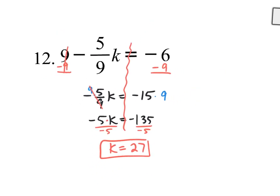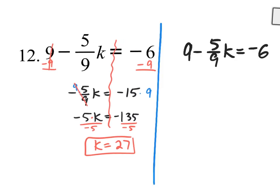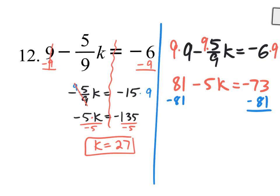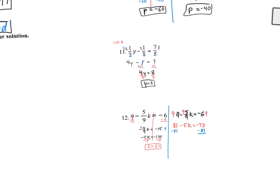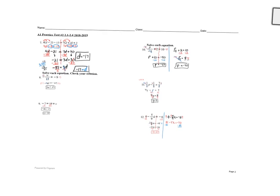Could we have done this one differently? Yes — you didn't have to get rid of the 9 first. You could have multiplied everything by the denominator 9 right away, giving 81 minus 5k equals negative 73. You'd still subtract 81 from both sides and get to the same answer. Pick the road you feel more comfortable walking on. If you want to get rid of the fraction right off the bat, go for it. Many roads lead to the same place. We are done with this video and done with the second page. On the next video, we'll pick up the third page of the practice test.